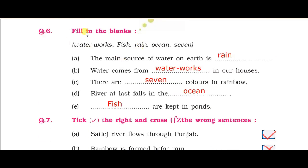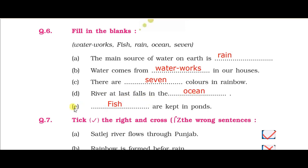Question number six — fill in the blanks. First fill-up: the main source of water on earth is rain. Next fill-up: the water comes from water works in our houses, from water tanks. There are seven colors in a rainbow. The river at last falls into the ocean. The last fill-up: fish are kept in ponds.